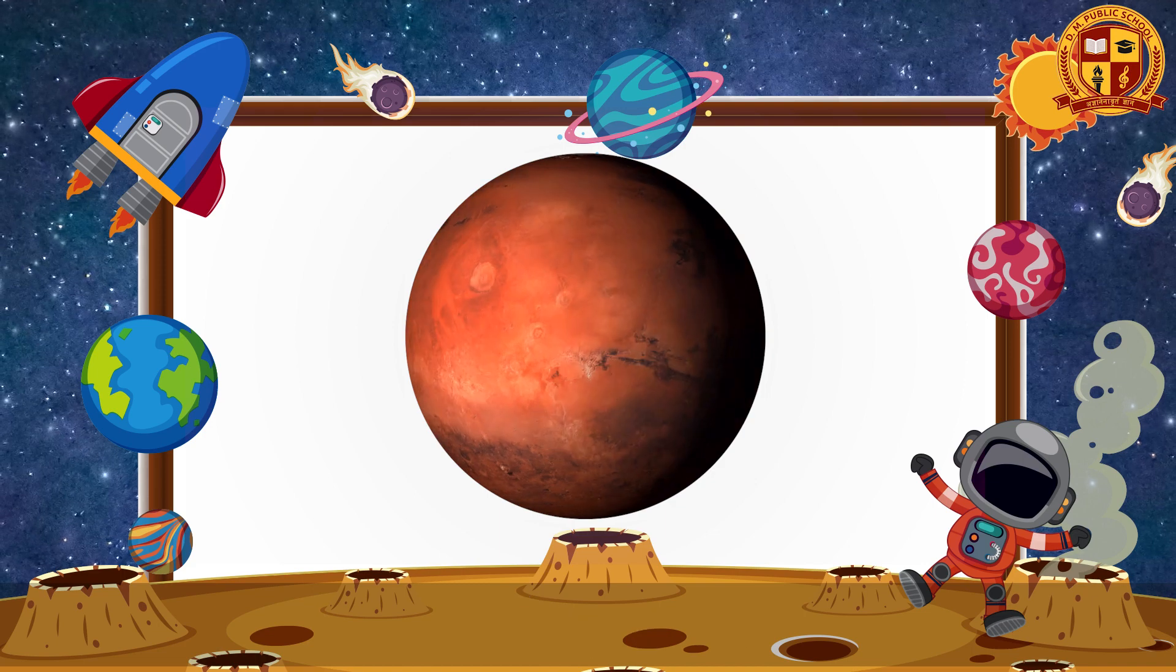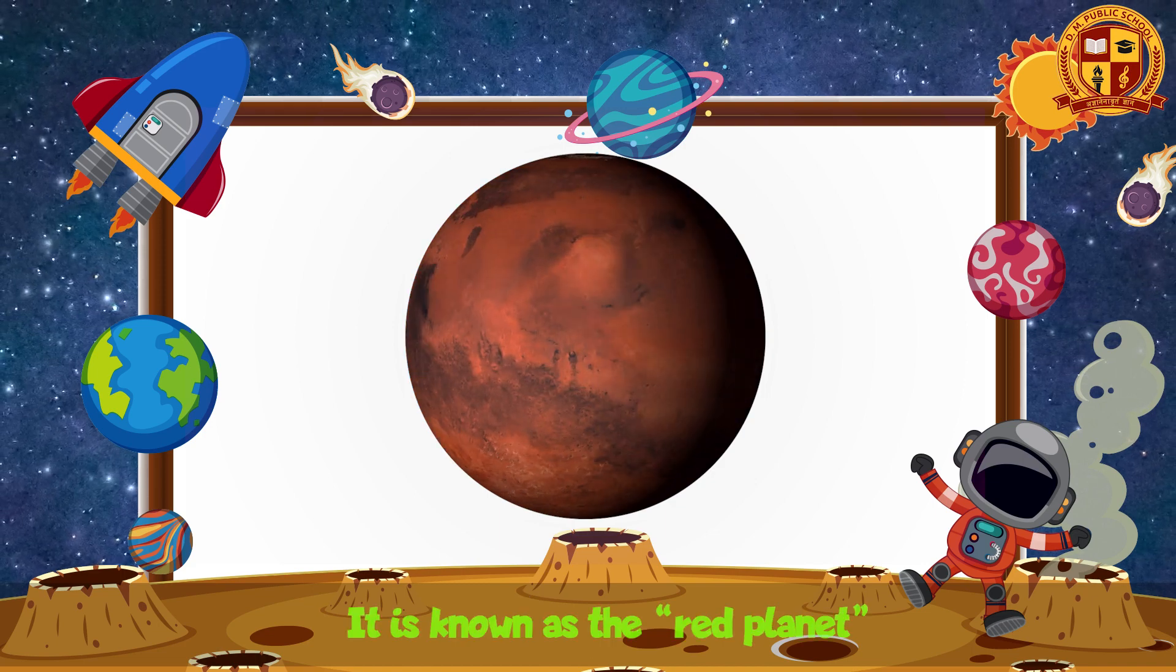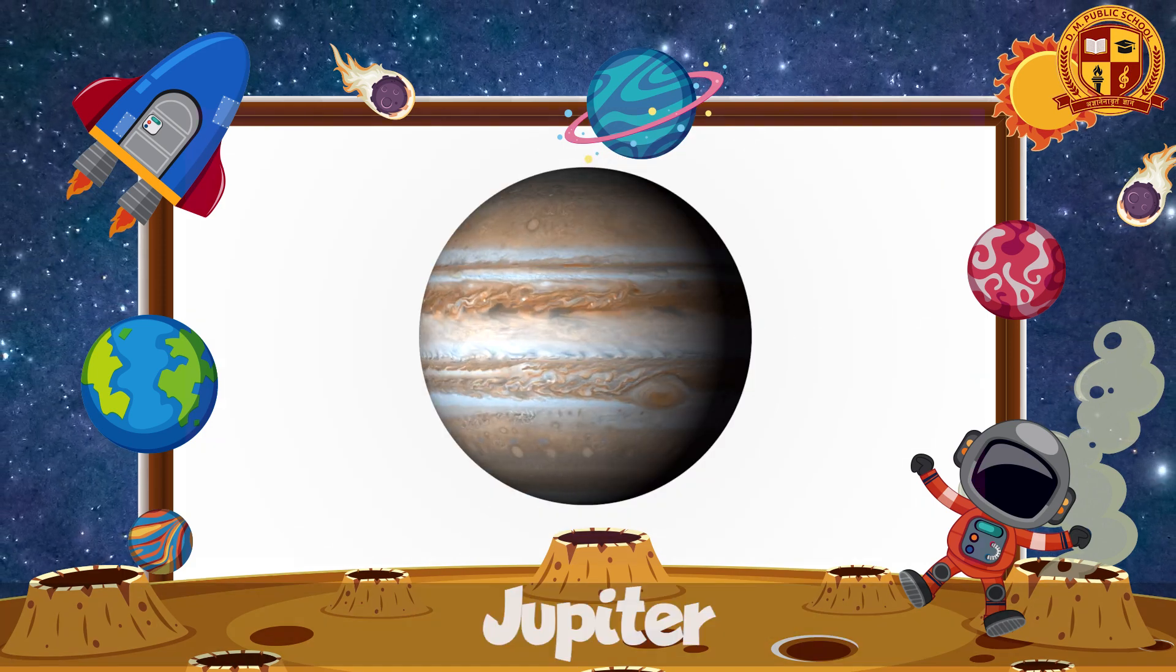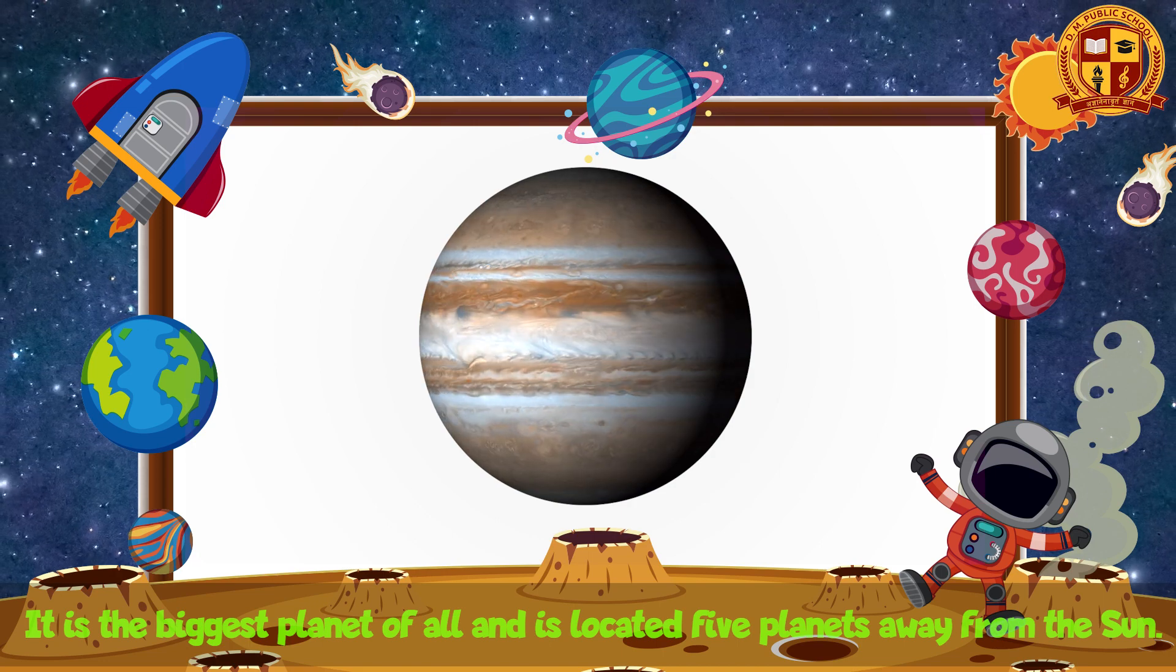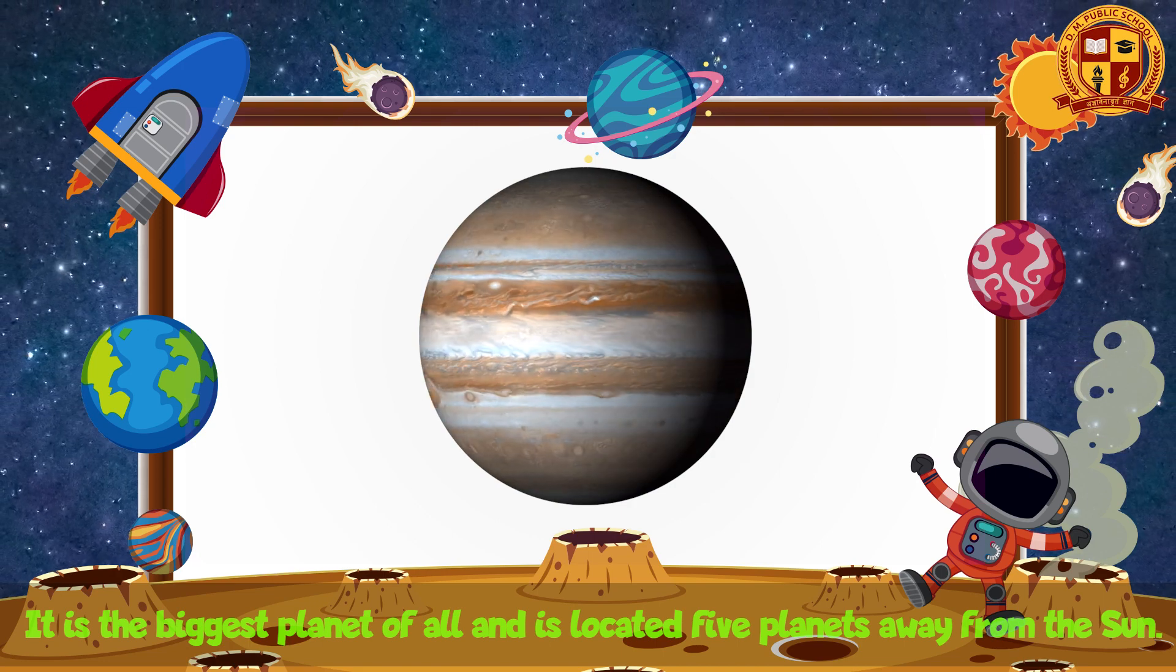Mars is known as the red planet. Jupiter is the biggest planet of all and is located five planets away from the sun.